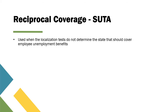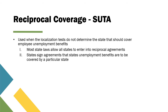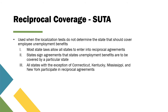Reciprocal coverage for FUTA is used when the localization tests do not determine the state that should cover employee unemployment benefits. Most states allow all states to enter into reciprocal agreements, where states sign agreements specifying which state covers unemployment benefits. All states with the exception of Connecticut, Kentucky, Mississippi, and New York participate in reciprocal agreements.